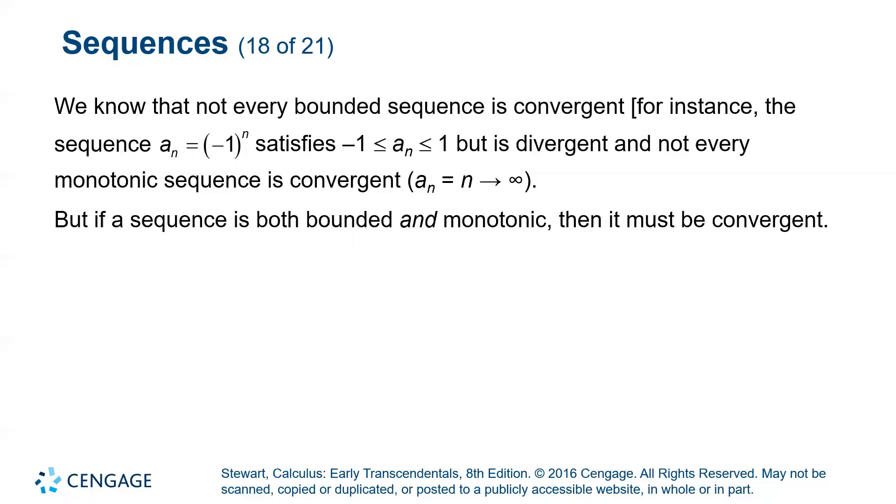So bounded means bounded above and bounded below. And monotonic means increasing or decreasing. So if you can control or contain, I should say, your sequence in between an upper bound and a lower bound, and it's strictly growing or strictly decreasing, then it must converge to some value L or some limit L.